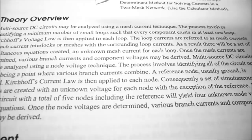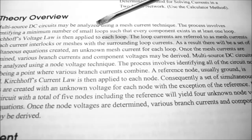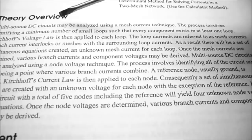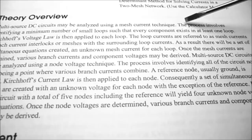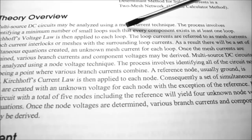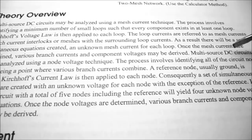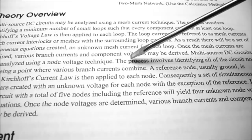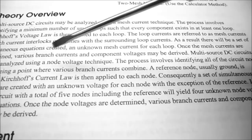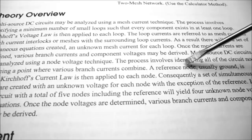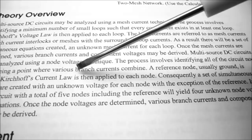There's a fairly large theory overview. It's important to note that multi-source DC circuits may be analyzed using a mesh current technique. The process involves identifying a minimum number of small loops such that every component exists in at least one loop, then we apply Kirchhoff's voltage law to each loop. Multi-source DC circuits may also be analyzed using a node voltage technique — identifying all circuit nodes, designating a reference node (usually ground), and then applying Kirchhoff's current law to each node.